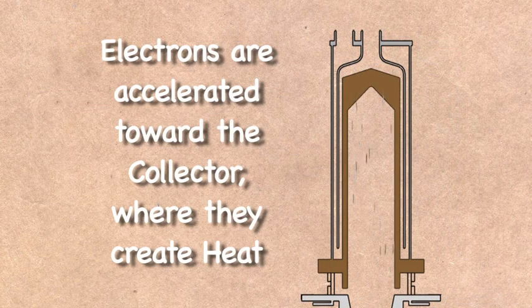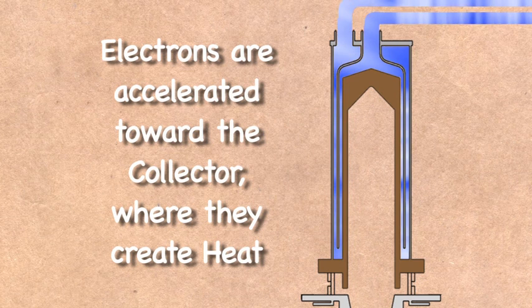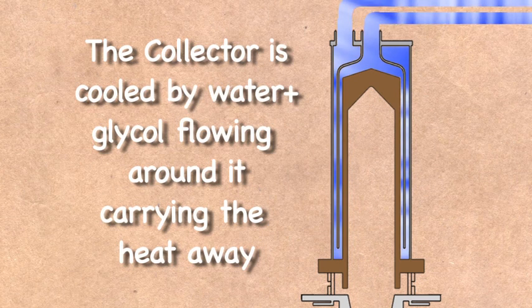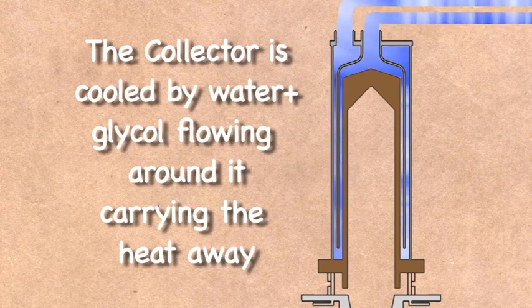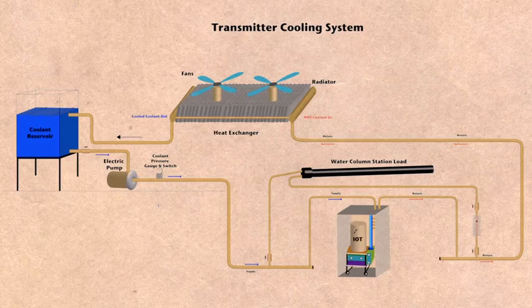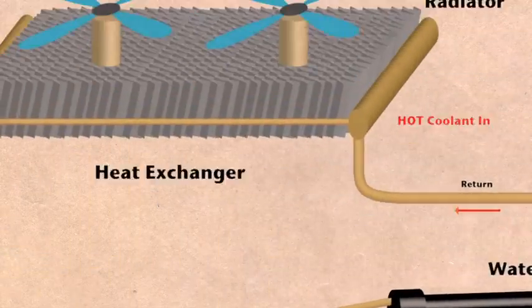As the beam of electrons strike the collector, it must dissipate that spent energy in the form of excess heat. It must be removed to keep the collector from melting. So the collector is surrounded by water, or a glycol water mix. The warmed coolant is sent to a heat exchanger where it is cooled and returned to the IoT.